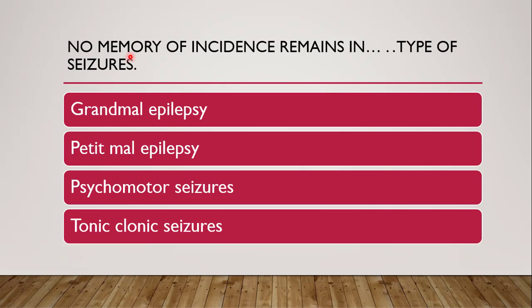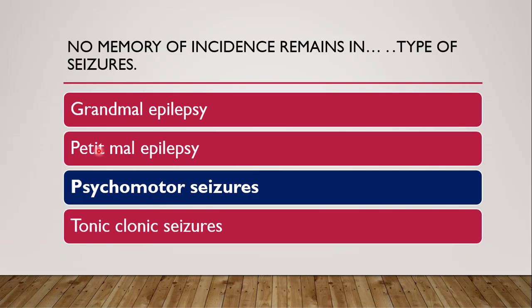Next question: no memory of incidence remains in dash type of seizure. Which type of seizure leaves no memory of the attack — grand mal epilepsy, petit mal epilepsy, psychomotor seizure, or tonic clonic seizure? The correct answer is psychomotor seizure. Grand mal and tonic clonic are one and the same; petit mal is absent seizure. Psychomotor seizure is a partial complex type of seizure limited to the temporal lobe, characterized by automatic pattern body movements lasting 2 to 3 minutes, after which no memory of the incidence remains in the patient.